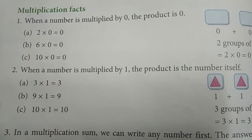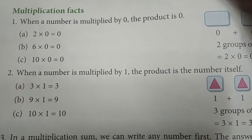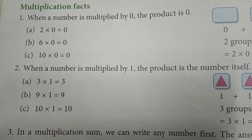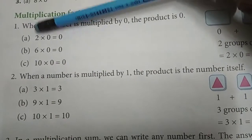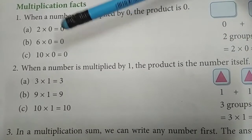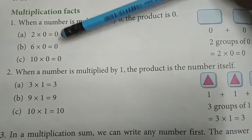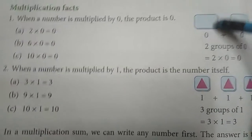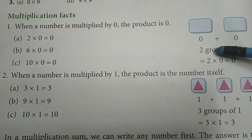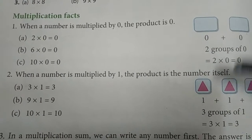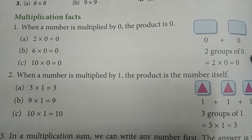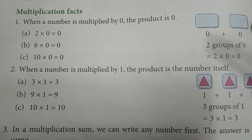So when a number is multiplied by 0, the product is 0. That means any number multiplied with 0, you will get 0. For example, 2 into 0 is 0, 6 into 0 is 0, 10 into 0 is 0, anything into 0 you will get 0. Why? Because 0 means nothing, so even if you add more groups of 0, you get 0 only. Multiplication is nothing but repeated addition, so 2 into 0 is 0.